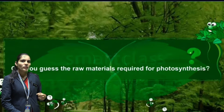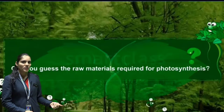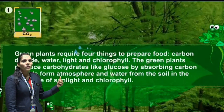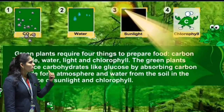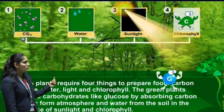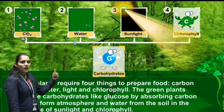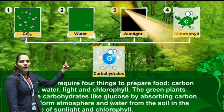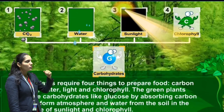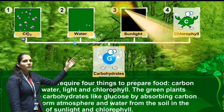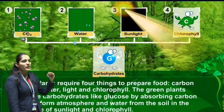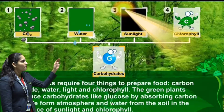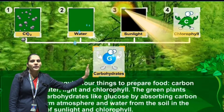Students, as we know, if we are making any special dish we require ingredients. So plants also require raw materials for making their food. They require carbon dioxide, which they take from the air. They require H2O — water — which they take from the root. And the chlorophyll pigment, which is already present in the plant, and sunlight, which they take from the sun. This is all the raw material they require.